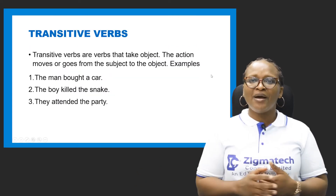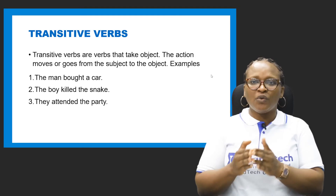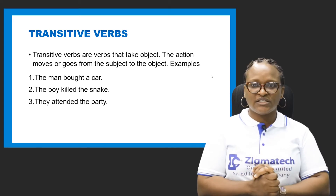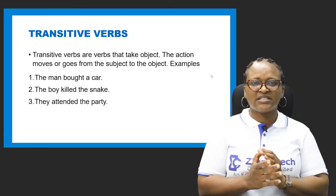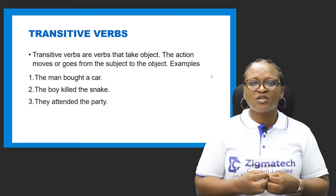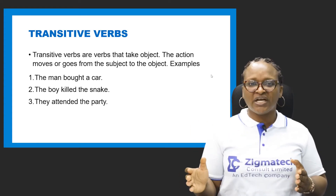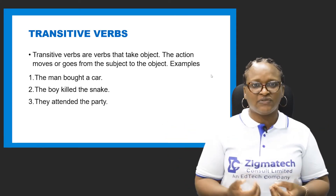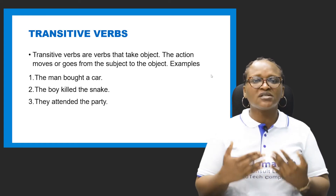We have three forms of verbs: regular and irregular, transitive and intransitive, and finite and non-finite. Transitive verbs are those verbs that take objects. Objects are receivers of action. In sentence structure, we have the subject who does the action, and the object that receives the action. Whenever there is an object after a verb, we refer to that verb as a transitive verb.